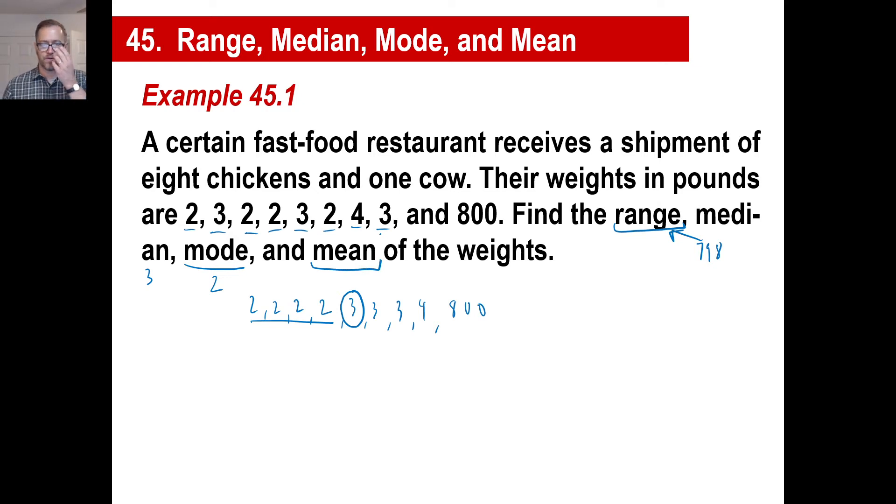The mode is the one that appears the most. So that looks like those are your twos. The mean, the arithmetic mean or the average is what we're going to find out here. So let's add these all together. So we've got 2, 4, 6, 8, and then 11, 14, and then 17, and then 21, and 800. So 821. And we will divide this by 9 because that's how many numbers there are. So 9 into 82 is 9, one left over. That's going to go once. One times 9 is 9. And that's going to be 91.2. That is our average weight. Of course, the one chicken, the large one, drags that average weight up quite a bit. Okay.